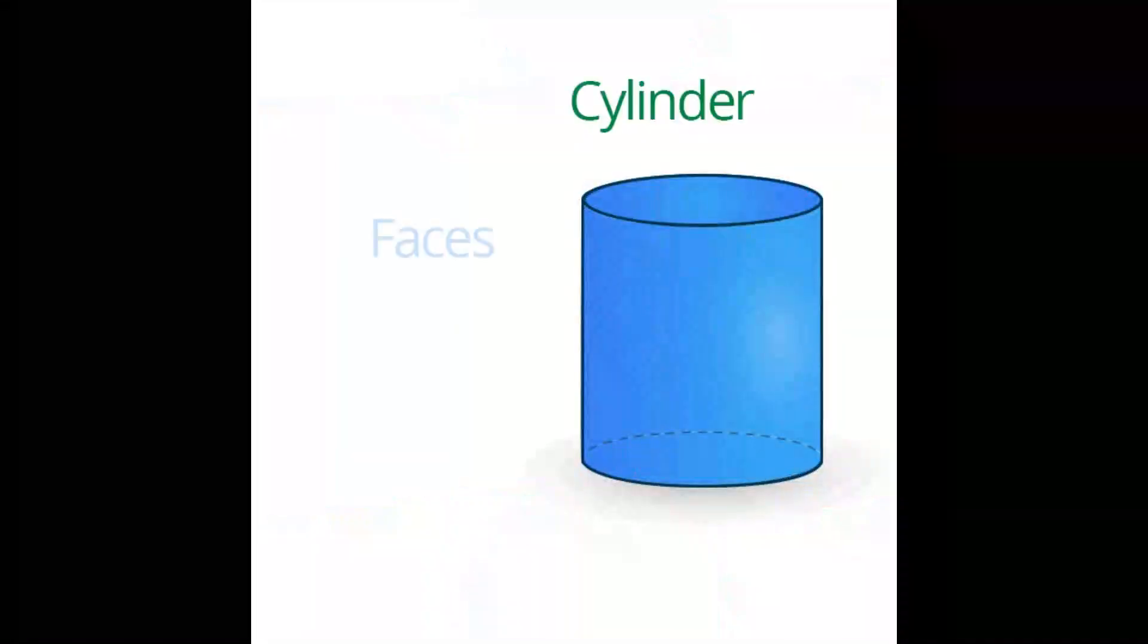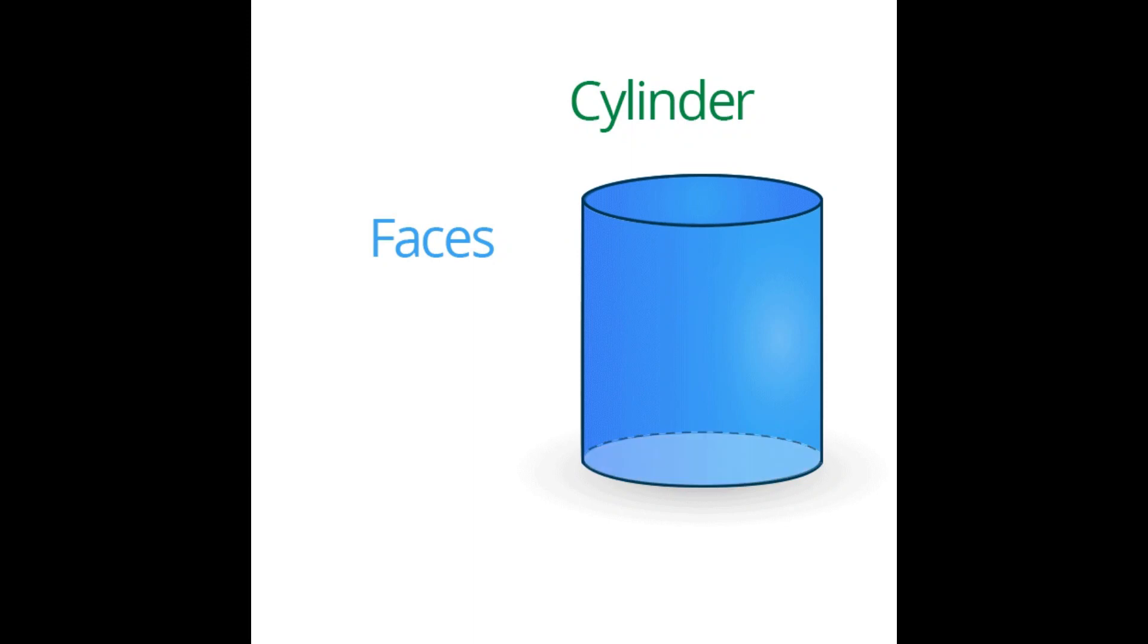In biology, cylinders are also found in nature, as in the case of plant stems and animal bones, which have a cylindrical shape.